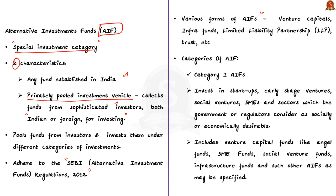Now let us see the three categories of AIFs. Category 1 can invest in start-ups, early-stage ventures, social ventures, SMEs, and sectors which the government or regulators consider socially or economically desirable. It includes venture capital funds like angel funds, SME funds, social venture funds, etc.